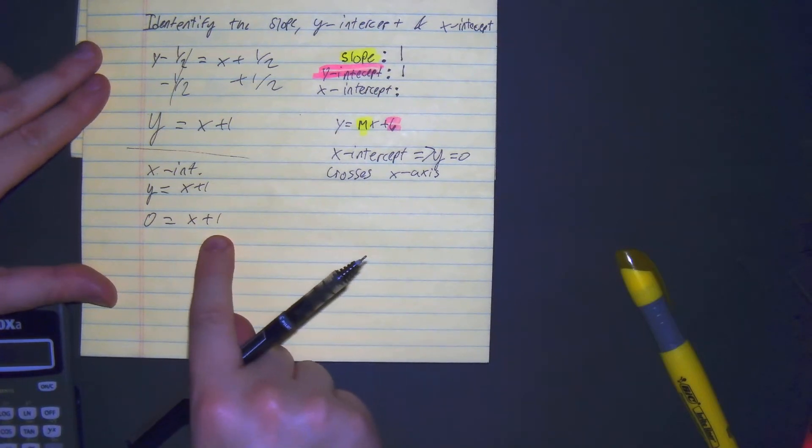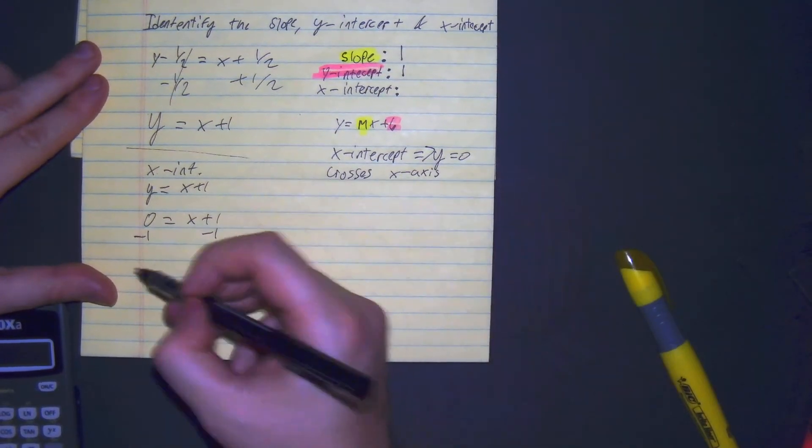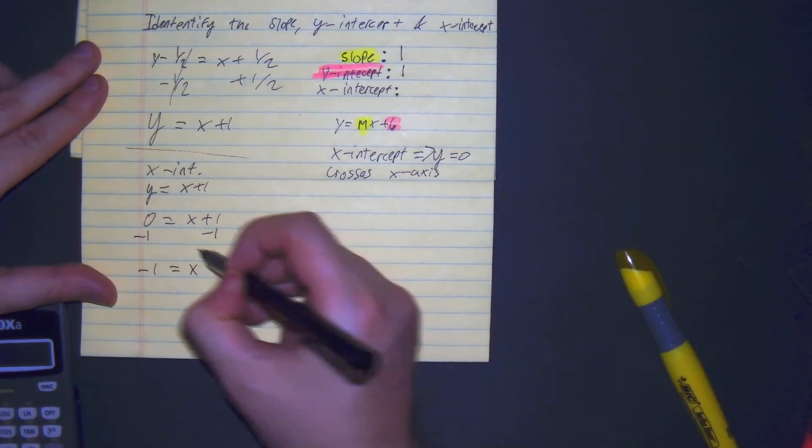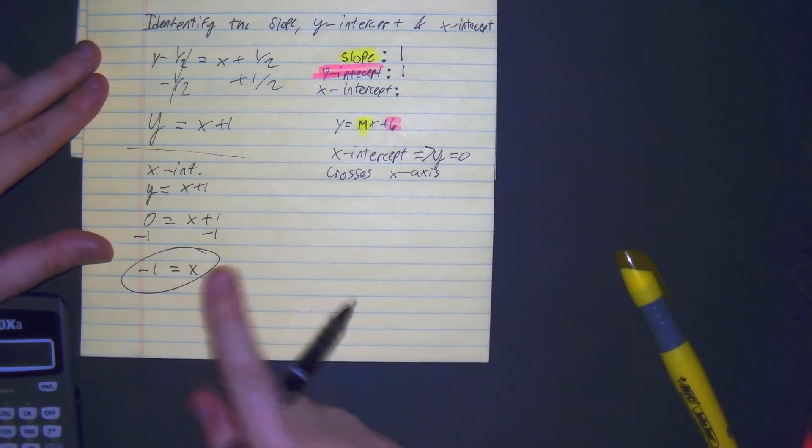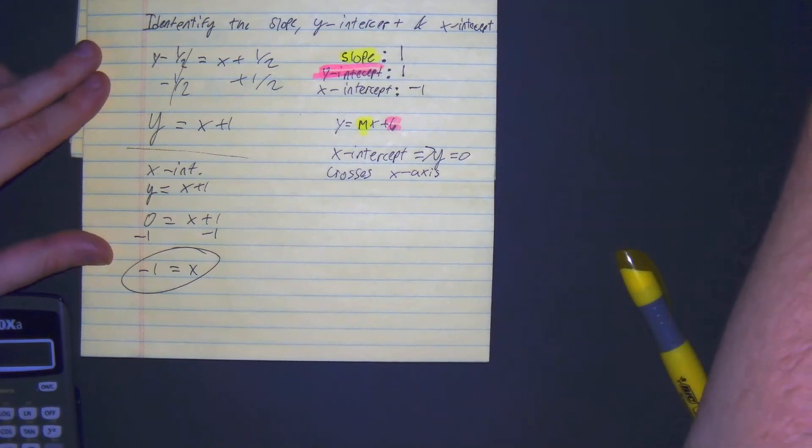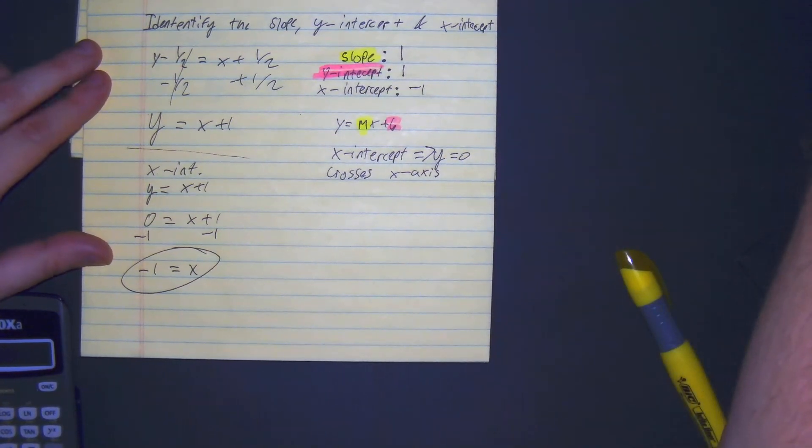So first, you have to subtract 1. Negative 1 equals x. So it crosses the x-axis at negative 1. There you have it. We found all three points of this equation.